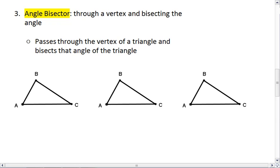If we're looking at angle A, the angle bisector will pass through A and cut angle BAC into two congruent angles.